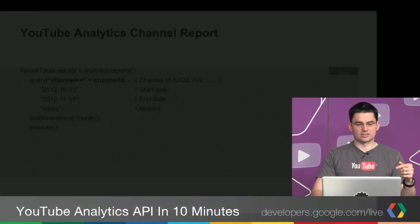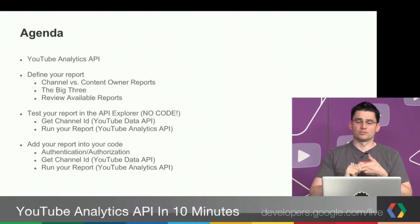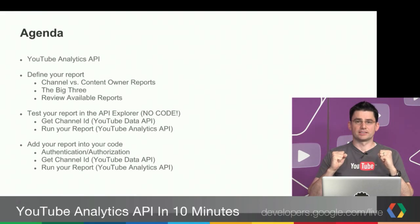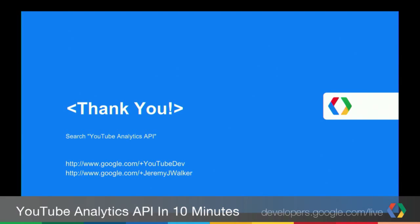That gives you an idea of how to get started really quickly. I've gone over the Analytics API — what it's used for to mash up reports, automate things, and combine maybe external data with your data. I've gone over defining a report, testing it out with the API Explorer, which is very, very important — make sure you do that, that's a big best practice. And then you port that over to your code. I happen to show Java, but again you could have done this in Ruby, Objective-C, whatever you want. Now you should be set to go and have some fun with the Analytics API. If you want to learn more, search YouTube Analytics API. You can follow my team on google.com/+YouTubeDev, and you can follow me as well at google.com/+JeremyJWalker. Thank you for your time.